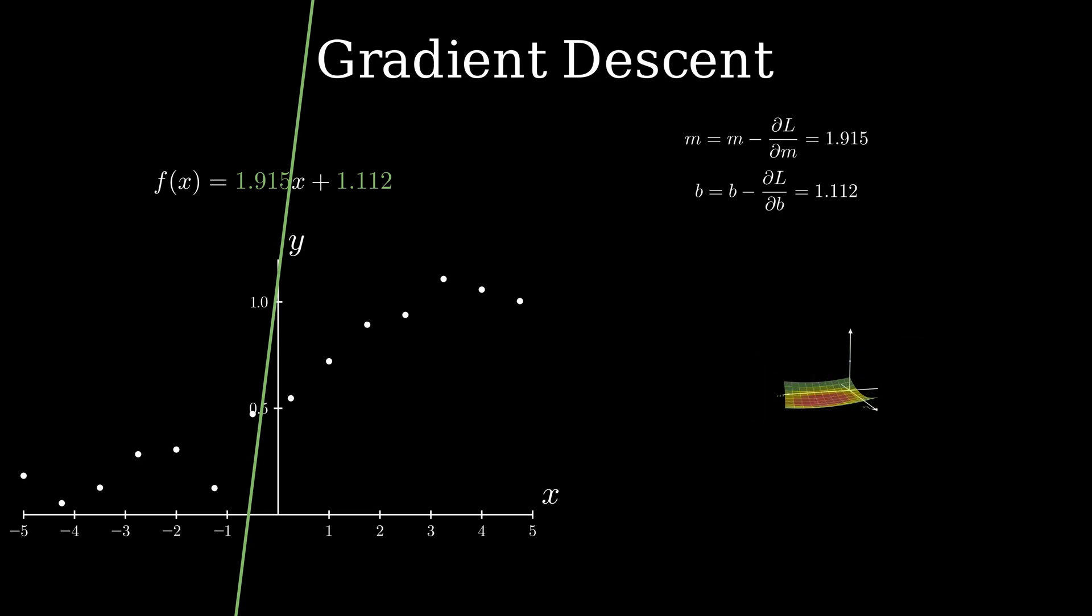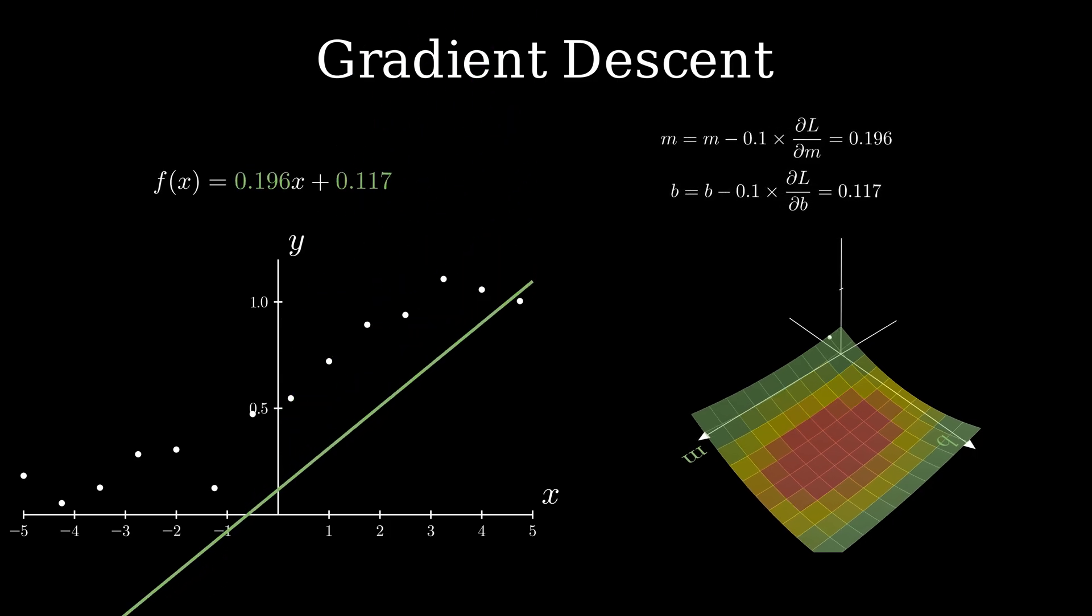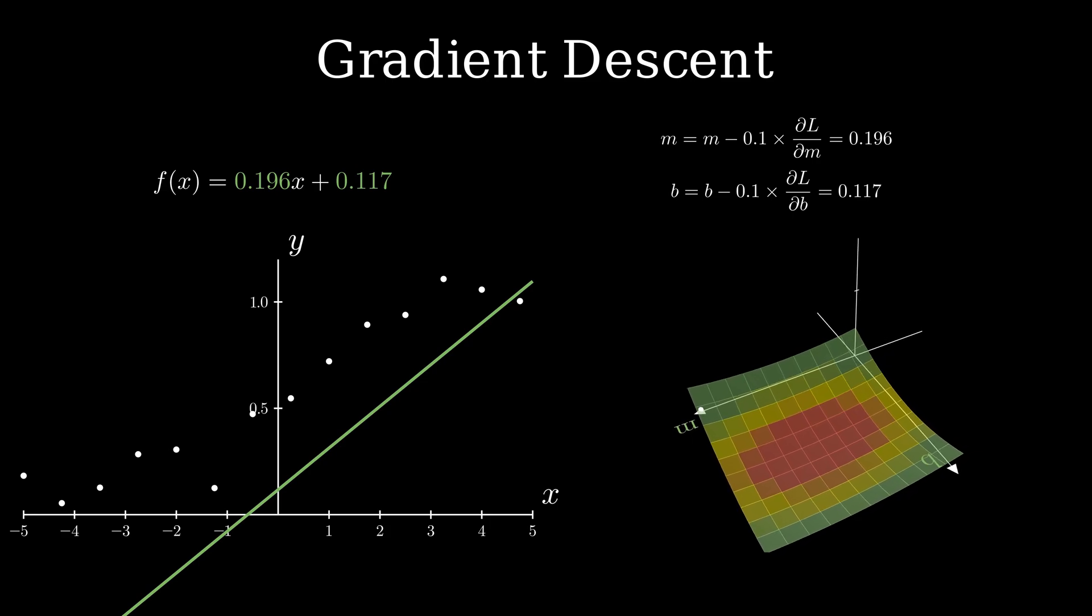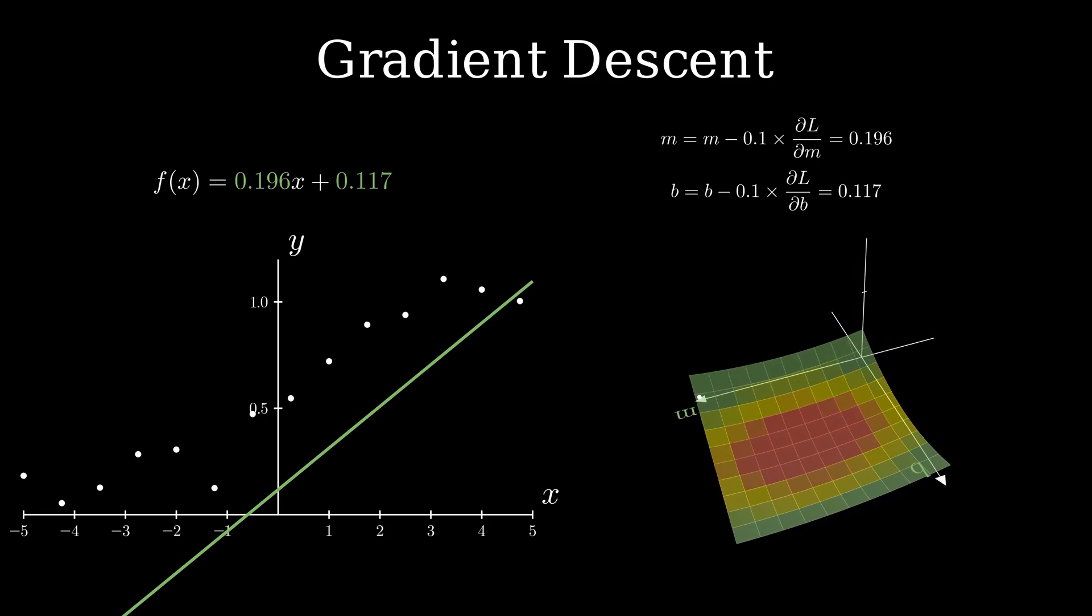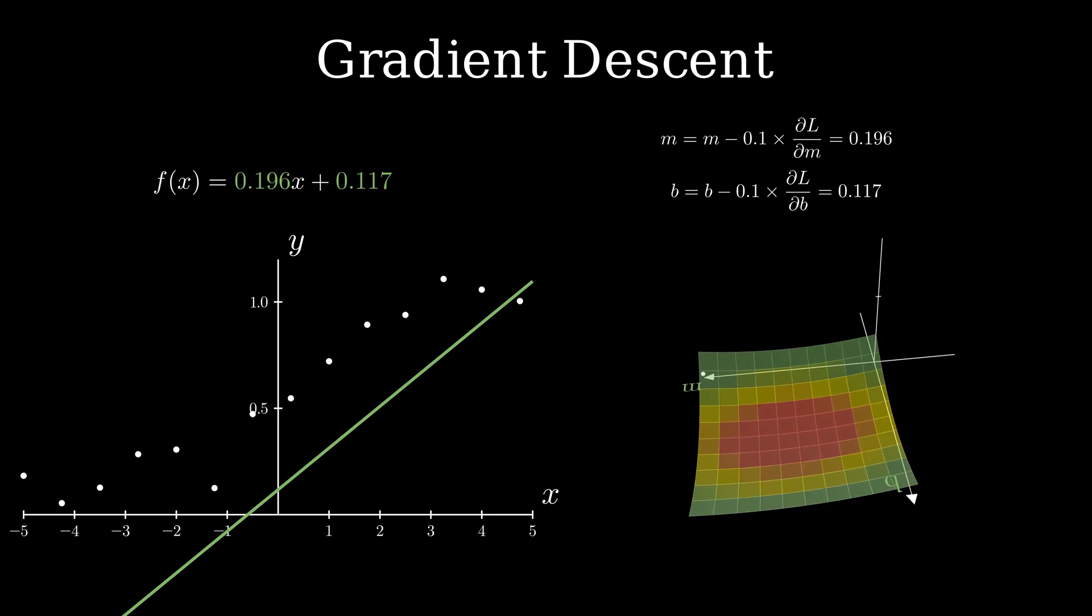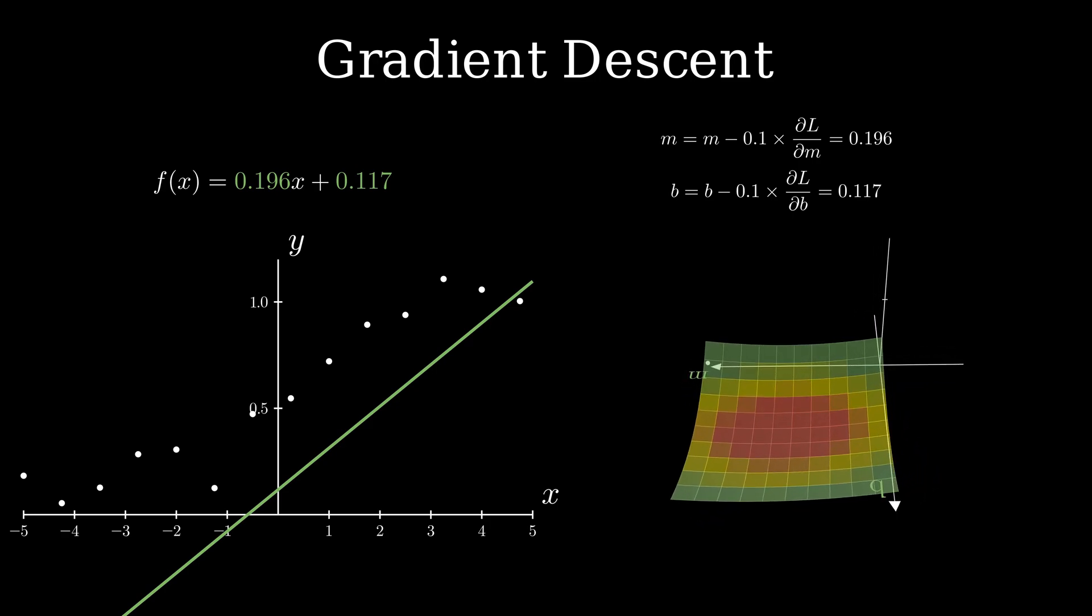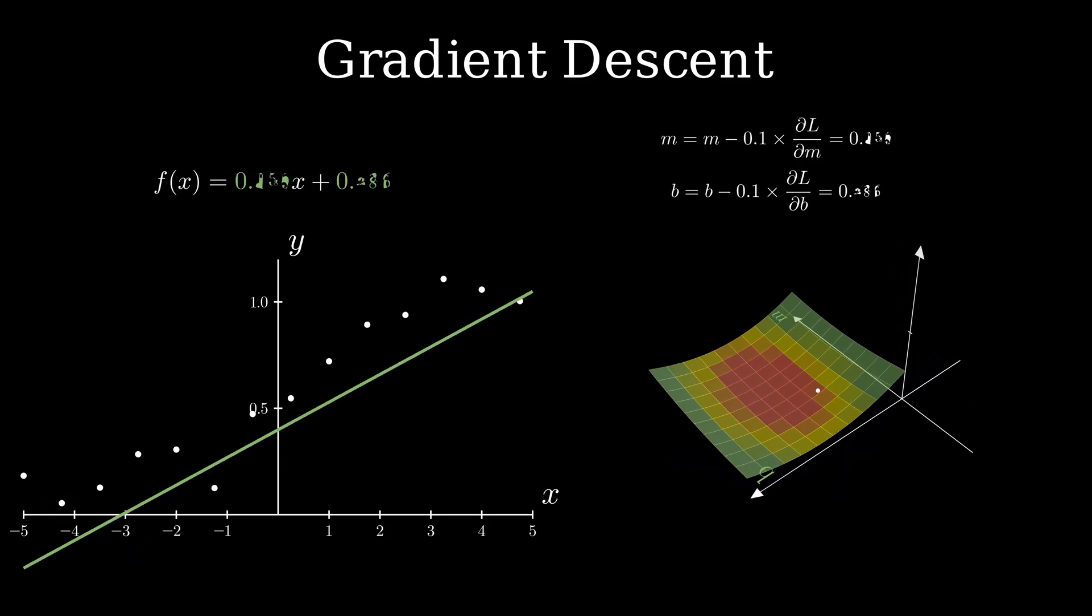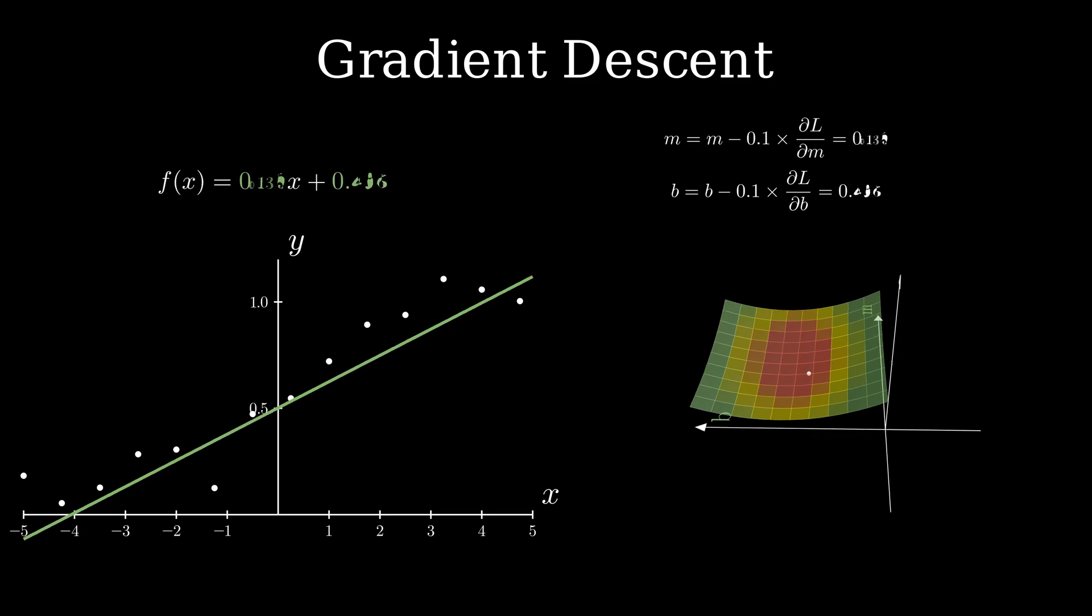For this reason, another term called step length is added in front of the derivatives to ensure that it doesn't overshoot. Step length is usually kept small and I've set that to 0.1 here. Now it's much better and you can see the dot moving towards the minimum. All I have to do is just repeat this a few times and it'll reach the bottom.